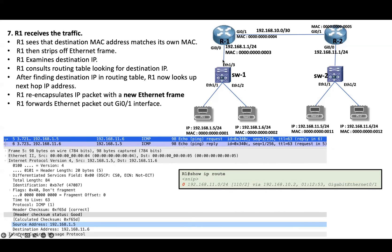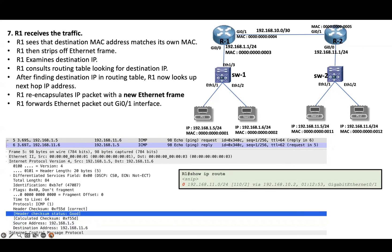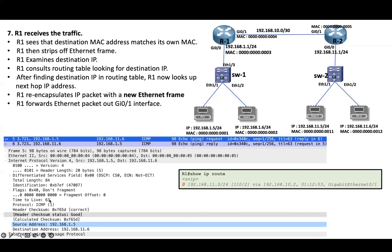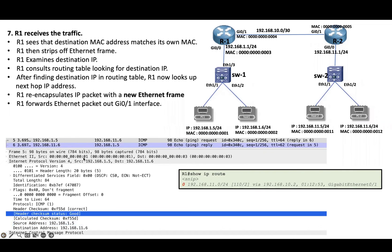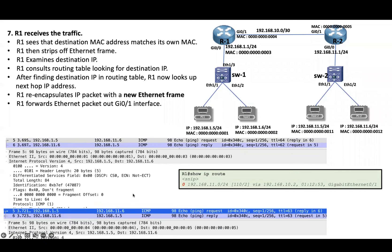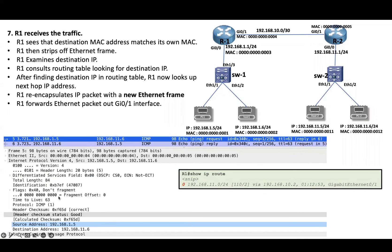As the packet is being routed, TTL will be decremented by one. It was 64 on receipt; however, it is 63 when sent out. At R1, the process is: strip off the Layer 2 header, find the best path based on the destination IP address in the IP header, encapsulate the IP packet into a new Layer 2 header, and forward it out of the exit interface.